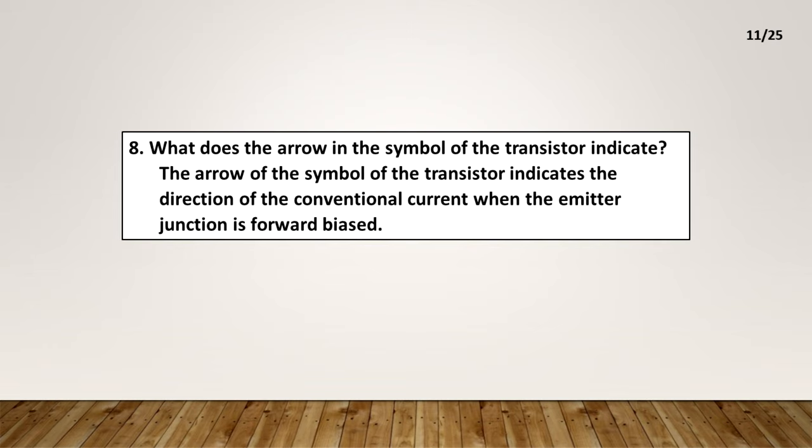What does the arrow in the symbol of the transistor indicate? The arrow of the symbol of the transistor indicates the direction of the conventional current when the emitter junction is forward biased.